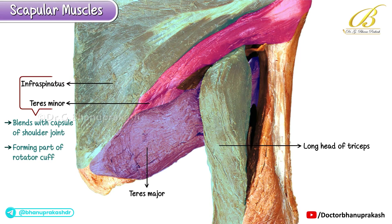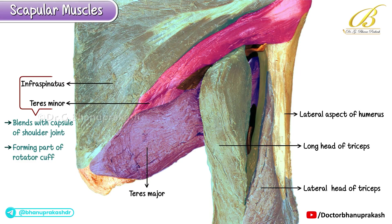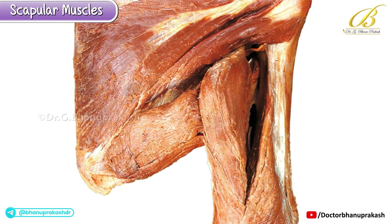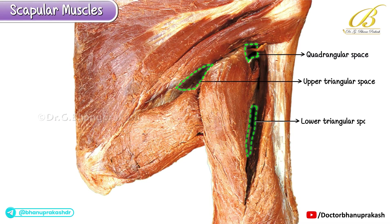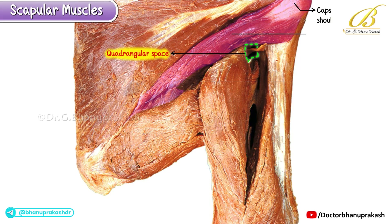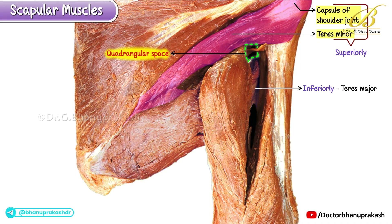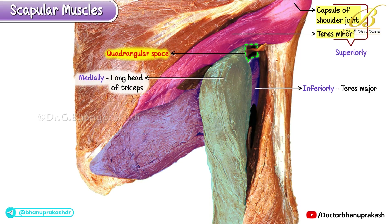The long head of the triceps lies on the medial side, while the lateral head is positioned along the lateral aspect of the humerus. Now let's identify the scapular spaces formed between these muscles: the quadrangular space, the upper triangular space, and the lower triangular space. The quadrangular space is bounded superiorly by the teres minor and the capsule of the shoulder joint, and inferiorly by the teres major.